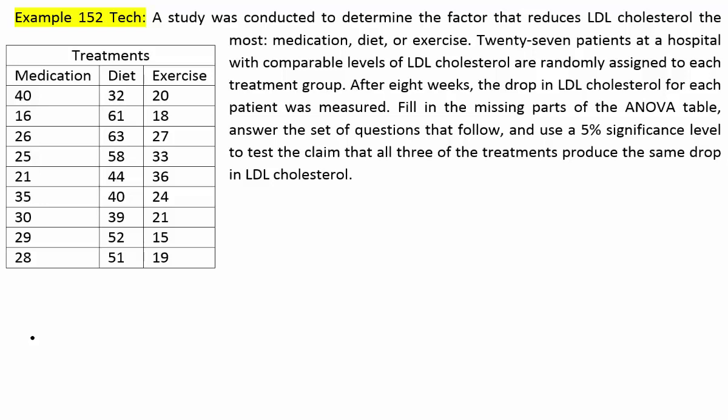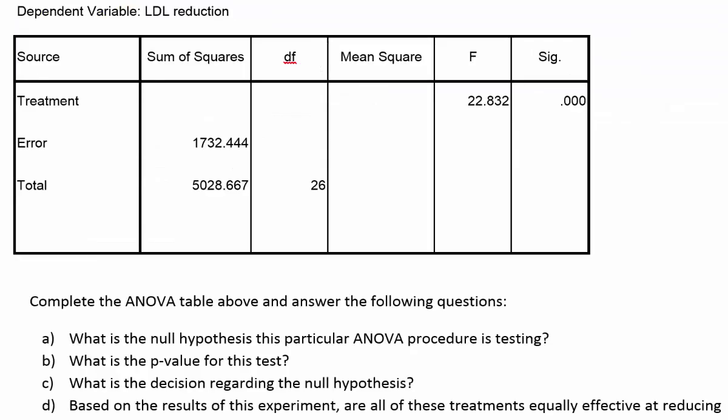They've already entered this data into SPSS and produced an ANOVA table. It's our job to complete that ANOVA table. The first thing we see is that we're missing the treatment sum of squares, but they do give us the total sum of squares and the error sum of squares.